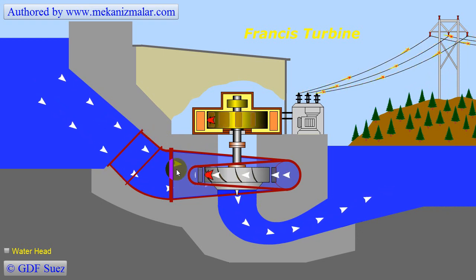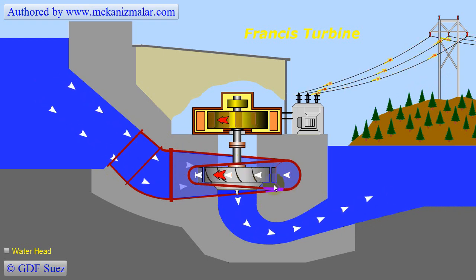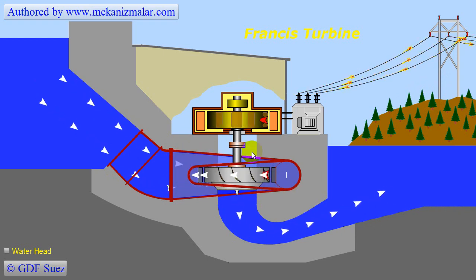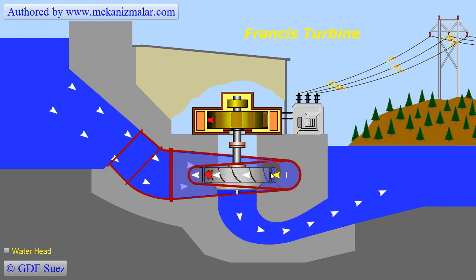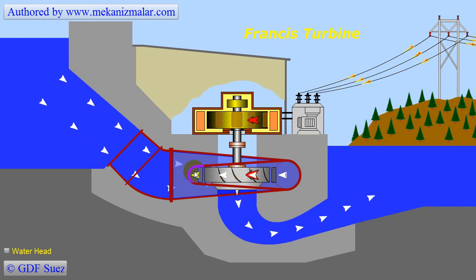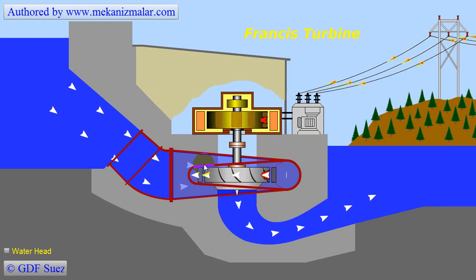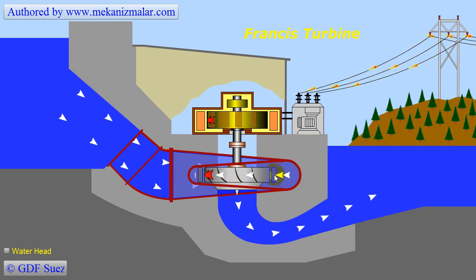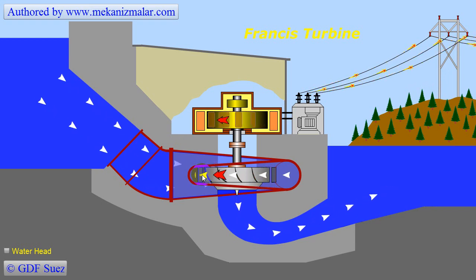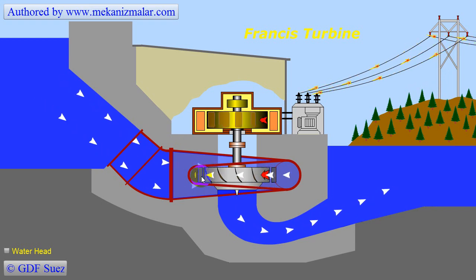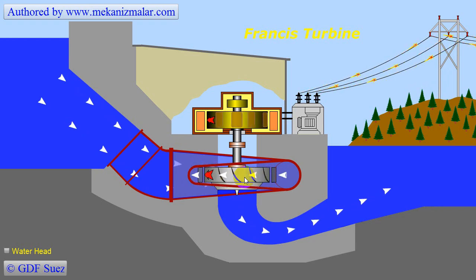The water coming from the penstock is transferred to the inlet scroll, which distributes the water equally around the wicket gates. Water then passes through the wicket gates, which control the amount of water passing through the turbine before reaching the runner.